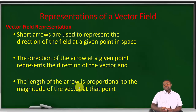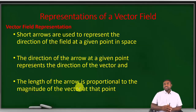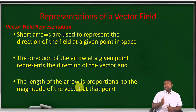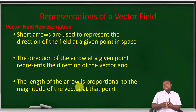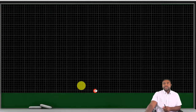There are two ways by which we can represent a vector field. We can use short arrows to represent the direction of the field at any given point in space. The direction of the arrow at that given point represents the direction of the vector at that particular point, and the length of the arrow is proportional to the magnitude of the vector at that given point.